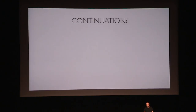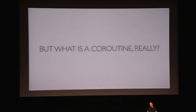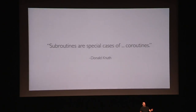Continuation — has anyone seen that before? There is an interface in the coroutine library with two important functions: resume and resume with exception. It also has a coroutine context. Donald Knuth, one of the founding fathers of computer science, is also one of the people who came up with coroutines back in the early 1960s. He said subroutines are a special case of coroutines — just replace subroutines with functions and you get the same thing. So coroutines is a more general form of thinking about functions. A coroutine is a function.